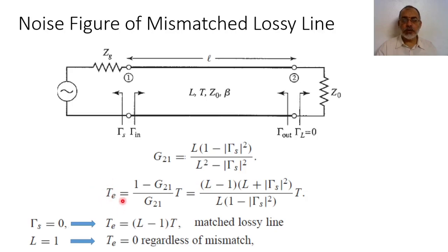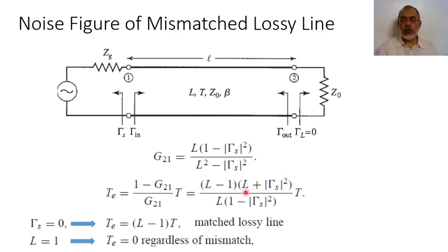Using the available gain, we can obtain the equivalent noise temperature Te for this two-port network. We stated that Te = (1 − G21) / G21 · T, where T is the physical temperature. Substituting G21 = L(1 − |γs|²)/(L² − |γs|²) and rearranging, the equivalent noise temperature can be expressed as Te = (L − 1)(L + |γs|²) / [L · (1 − |γs|²)] · T.